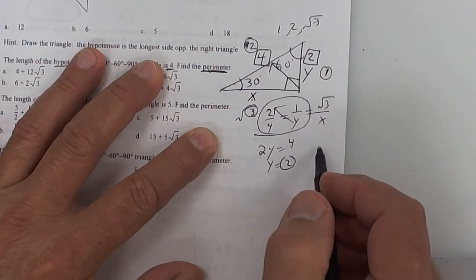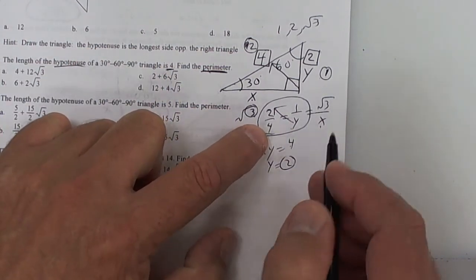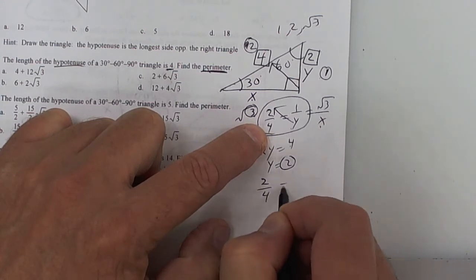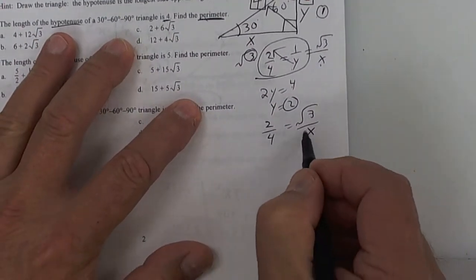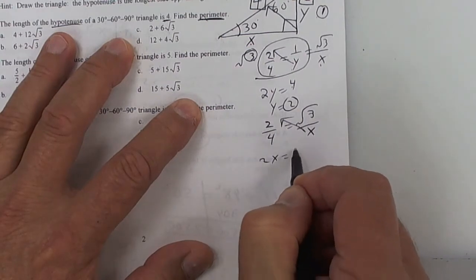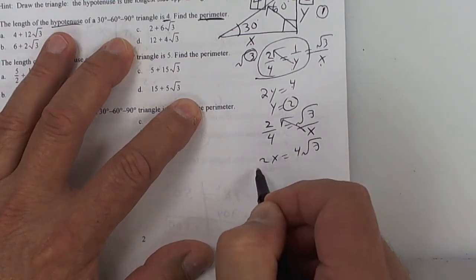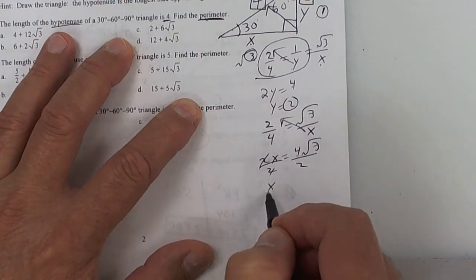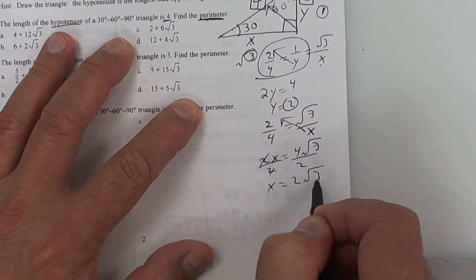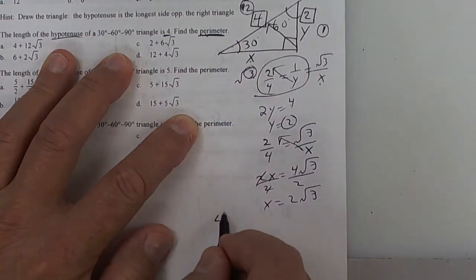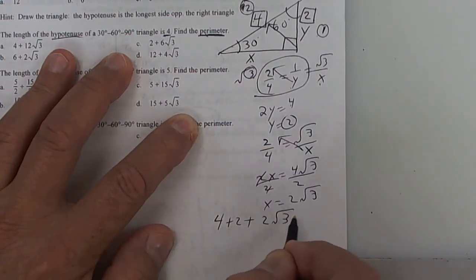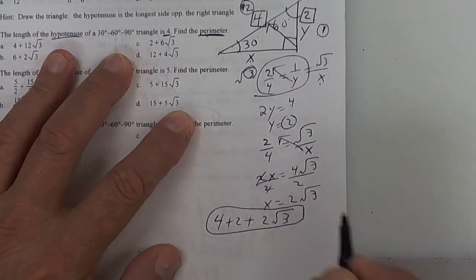Well, the last one, you're going to use this one and this one. So put 2 over 4 equals square root of 3 over x. Now cross-multiply. So you get 2x equals 4 square root of 3. Divide by 2. 4 divided by 2 is 2. So you get 2 square root of 3. So you want to add up 4 plus 2. 4 plus 2 plus 2 square root of 3. This is your answer, but you've got to work it out.